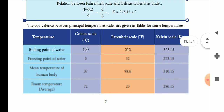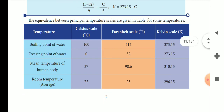Looking at reference temperatures: boiling point of water is 100 degrees Celsius, 212 degrees Fahrenheit, and 373 Kelvin. Freezing point of water is 0 degrees Celsius, 32 degrees Fahrenheit, 273 Kelvin. Mean body temperature is 37 degrees Celsius, 98.6 degrees Fahrenheit, 310.15 Kelvin. Room temperature is 23 degrees Celsius, 72 degrees Fahrenheit, and 296.15 Kelvin.